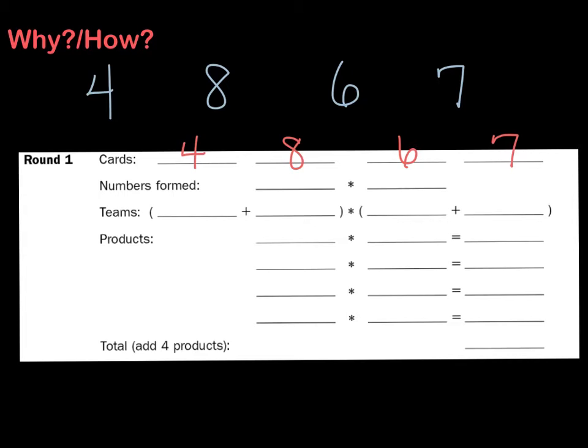The object of the game, of course, is to try to make the largest product that you can when you multiply those numbers. So you probably want to be thinking about making the biggest number that you can with those four digits. If I were going to make the biggest number that I could with those four digits,